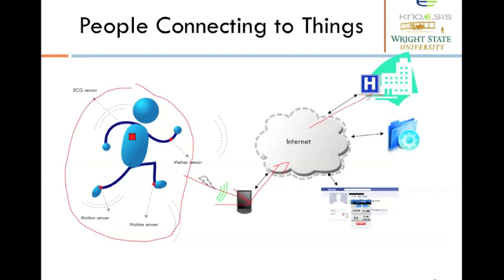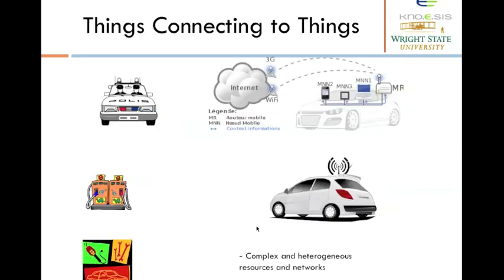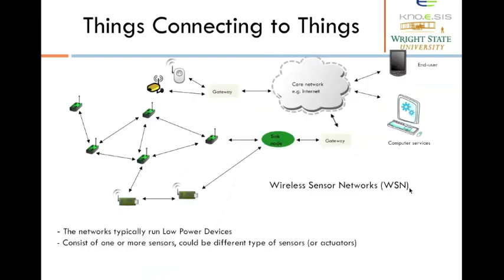Doctors can directly get access to this data for deriving new insights. There are also things connected to things. For example, smart cars can communicate with each other to avoid collision. Another example of things connected to things includes wireless sensor networks, which include sink nodes and gateways. Sink nodes possess limited computational capabilities, while gateway nodes act as an aggregator of data from the sink nodes, and all these devices are connected to the internet.